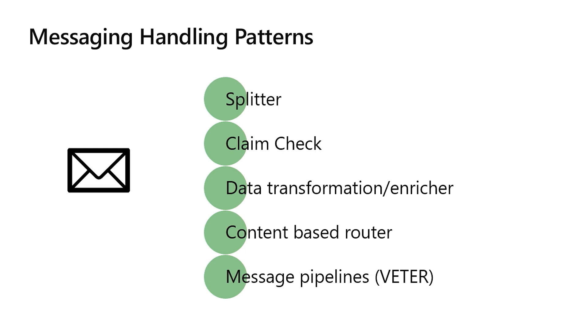The claim check pattern: in messaging scenarios you don't want to pass big payloads as part of your queue messages. The pattern is to have your queue message contain a reference to the item — for example, in a blob store. If you have a 20-megabyte message, you don't put it in the queue; you pass a reference, and then pull the actual content only when needed within the business process.